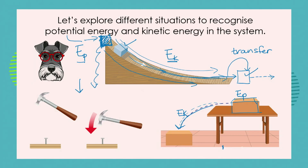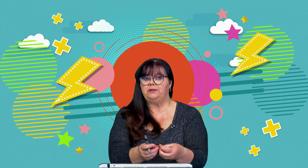We've got a nail sticking out of a piece of wood and we have a hammer. We pick up the hammer and raise it up — when the hammer is raised up and still, it has one form of energy. While it is moving down to whack that nail into the wood, it has another form of energy. The raised hammer has potential energy, and as it is moving down it has kinetic energy.